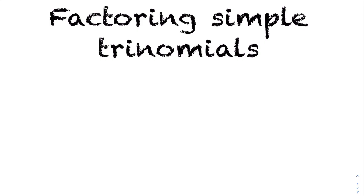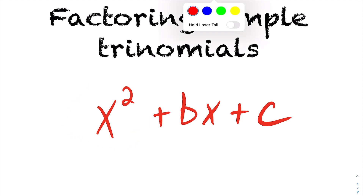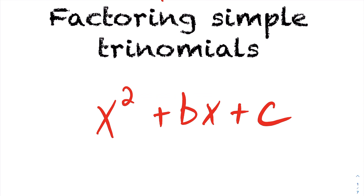We're going to be talking about factoring simple trinomials. The word 'tri' means 3, and to be a simple trinomial, you would be of this form: x squared plus bx plus c. The b and c values are any real number, and the main thing that makes a simple trinomial is the coefficient in front of the x squared must be a 1. Let's look at some examples of what a simple trinomial is.